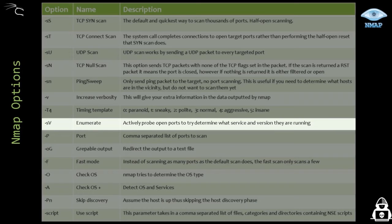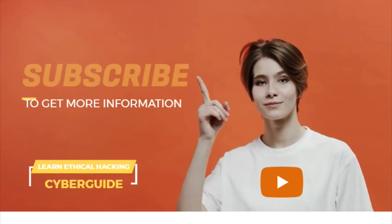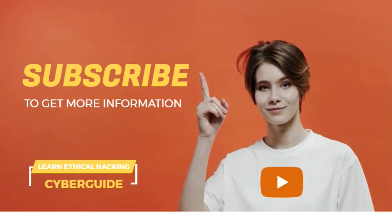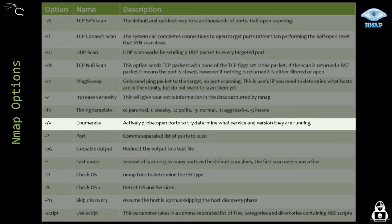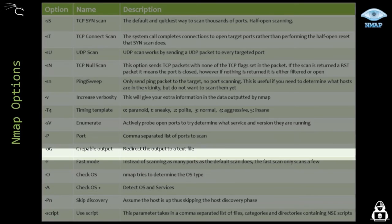The -sV option is used to enumerate and determine the services and the version of the OS running on the destination host. -p stands for port, and -oG is to redirect the output to a text file for further analysis.